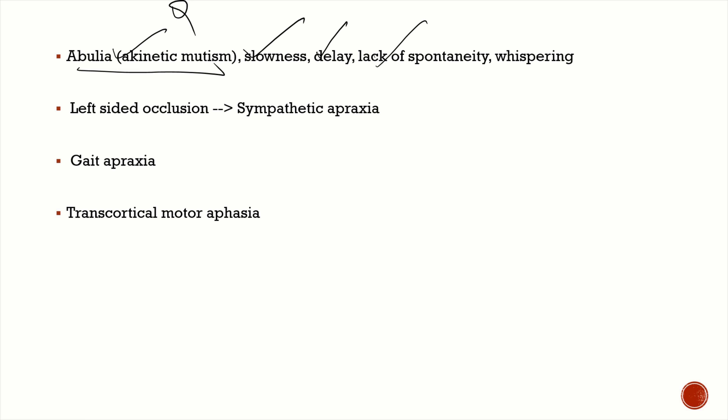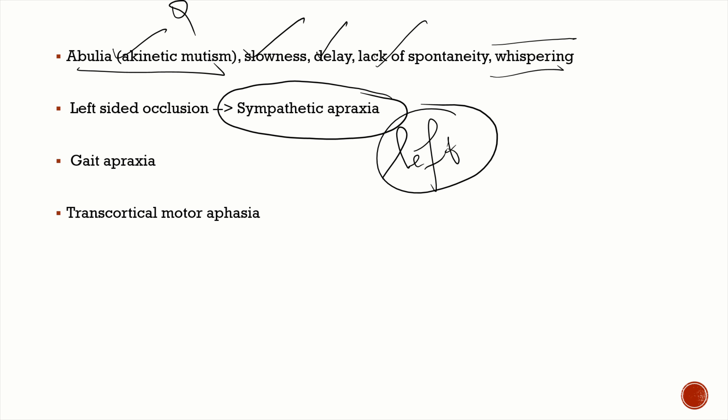The patient will also have akinetic mutism — very important — also called abulia: slowness, delay, and lack of spontaneity in movements. Rather than speaking normally, the patient will speak in whispers. In left-sided occlusions, you're going to have sympathetic apraxia, because the parietal lobe is needed for planning of movements. The planning from the left parietal lobe doesn't reach the right motor cortex, so you get sympathetic apraxia involving the left hand — seen only in left-sided lesions.